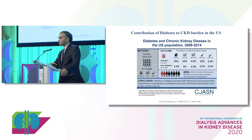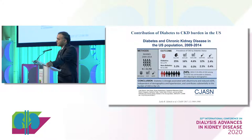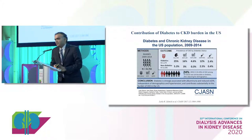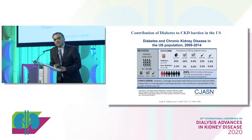Those who care for dialysis patients know that 50% of the dialysis population have diabetes, and diabetes is the reason they have ESRD. Looking at CKD more broadly, among diabetics included in the NHANES survey between 2009 and 2014, 25% had CKD, while non-diabetes accounted for only 5% of CKD. In essence, one in four patients with CKD can have it attributed to diabetes — representing a significant patient burden.